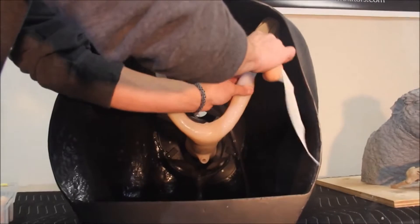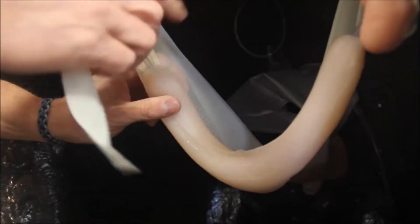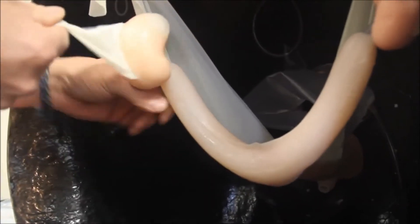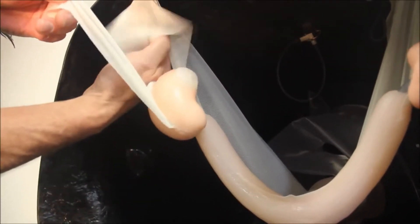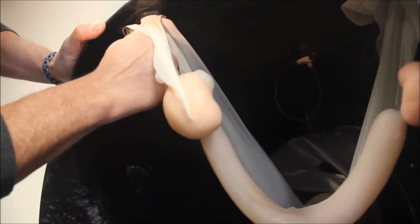The tubes on each ovary simply insert into the end of the uterine horn until there is approximately one inch or 2.5 cm of tube showing. The attached ligament is then tucked behind the magnet.